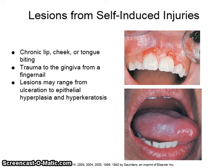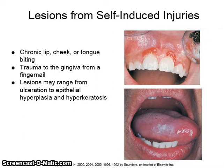Lesions from self-induced injuries include chronic lip, cheek, or tongue biting, and trauma to the gingiva from a fingernail. Lesions may range from ulcerations to epithelial hyperplasia and hyperkeratosis. The image on the top right shows an ulceration caused by fingernails, and on the lower right, a hyperkeratosis caused by tongue biting.